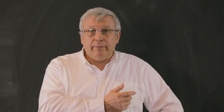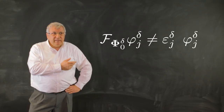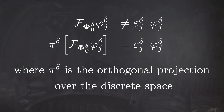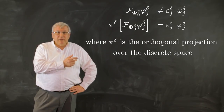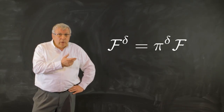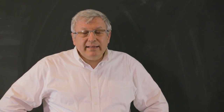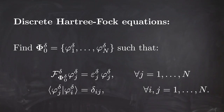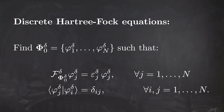This is the Galerkin approximation, which doesn't mean F[φ₀^δ]φⱼ^δ = εⱼ^δ φⱼ^δ, but rather that the projection P^δ of F[φ₀^δ] applied to φⱼ^δ equals εⱼ φⱼ. Here π^δ represents the orthogonal projection in the L² scalar product onto the discrete space. Setting F^δ = π^δ F, the discrete Hartree-Fock equation reads: find φ₀^δ = (φ₁^δ, …, φₙ^δ) such that F^δ[φ₀^δ]φⱼ^δ = εⱼ^δ φⱼ^δ for every j from 1 to N, with the orthonormality condition.